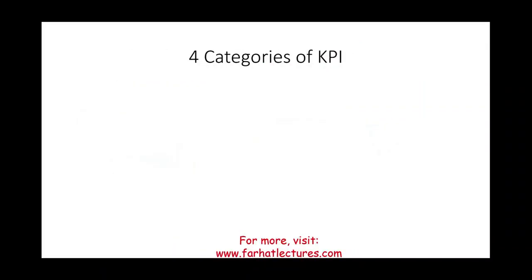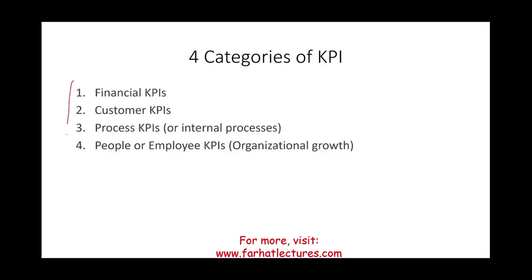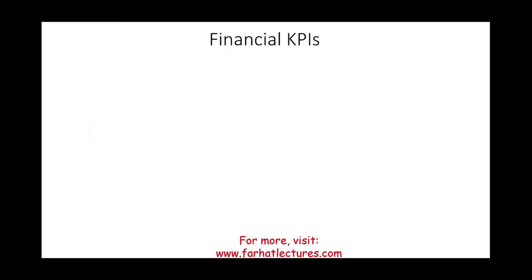The four categories of KPIs are: financial KPIs, customer KPIs, process KPIs (or internal processes), and people or employee KPIs — sometimes called organizational growth in your textbook or CPA review course. I'll go over each item on this list, explaining what each one is and giving an example, starting with financial KPIs.